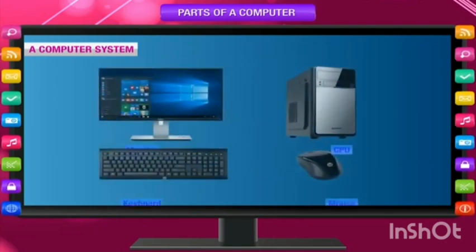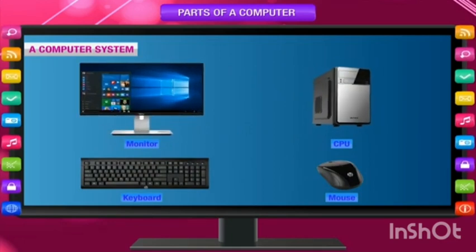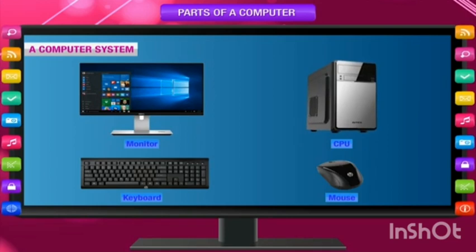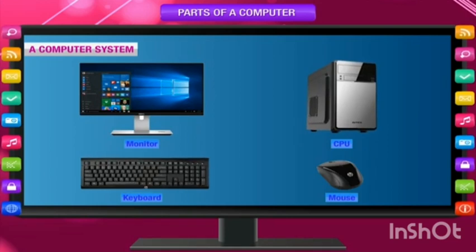Different parts of a computer are as follows: Monitor, CPU box, keyboard, and mouse.